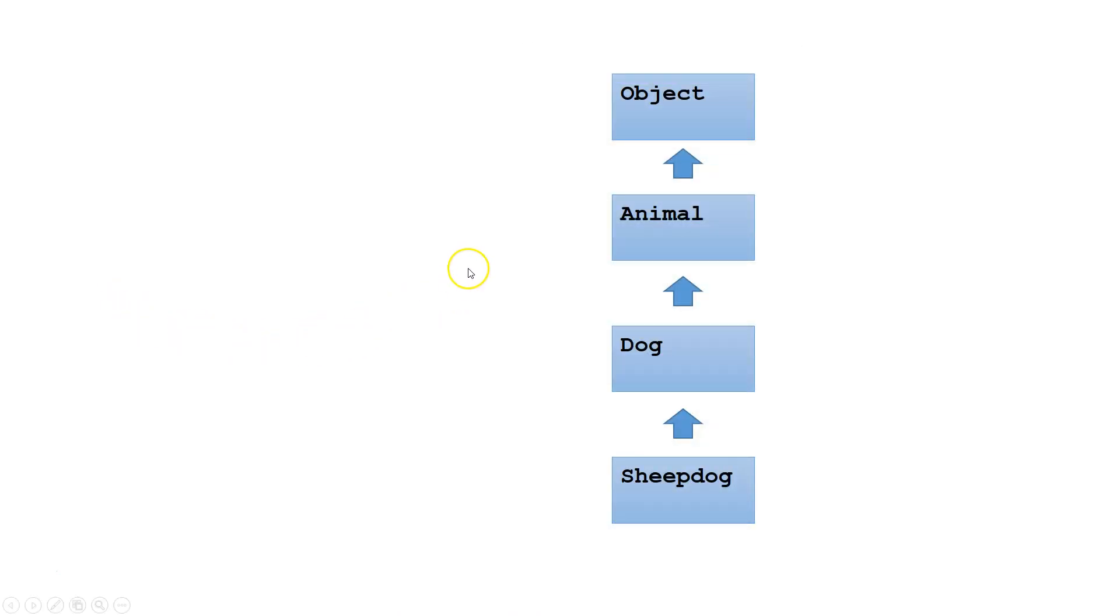Let's look at this relationship of classes. At the top, we have the Java object class. Next, we have the Animal class, which is a subclass of object. Animal is a object.